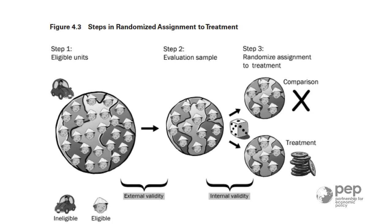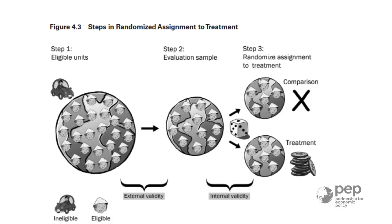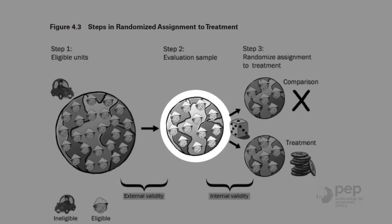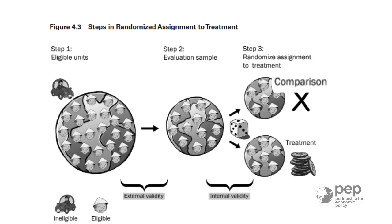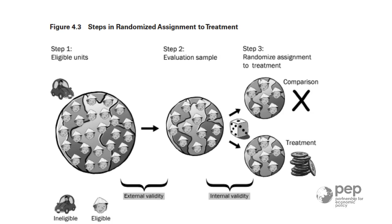The second property of a good impact evaluation is internal validity. This is where the randomized experiment comes into play, because they are the best way to ensure internal validity. Once we have our experimental sample, the following step is to split it into two statistically identical groups: treatment and control. The best way ever invented to do this is randomly. Randomized control trials are the gold standard of program evaluation, and there is no other technique that can do better. Under certain conditions, some other techniques can be as good as a randomized evaluation, but not better.